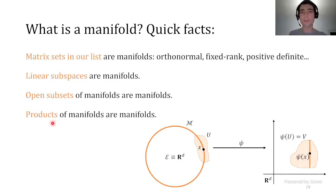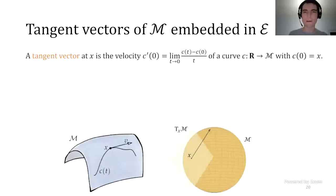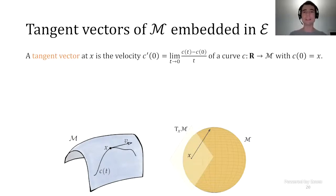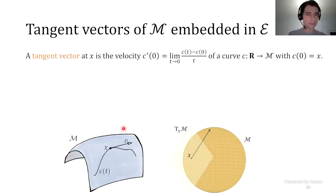Why do we care about manifolds? Mostly because they are linearizable. What does it mean to linearize a manifold? It means you can approximate it with a tangent space at each point. What's a tangent space? It's a set of tangent vectors. Looking at the cartoon at the bottom left: you have your manifold M—think of it as a subset of R^3—and there is a point X on the manifold M.